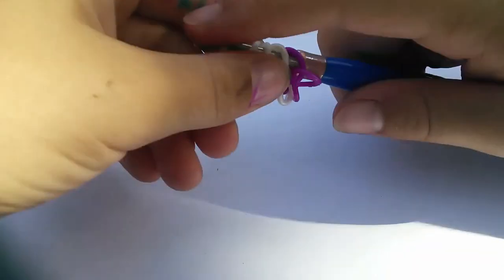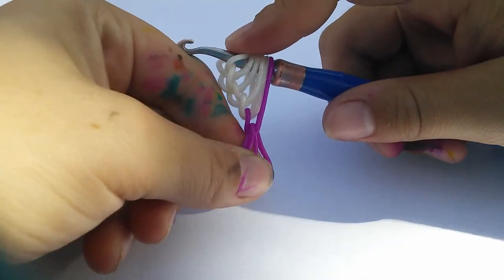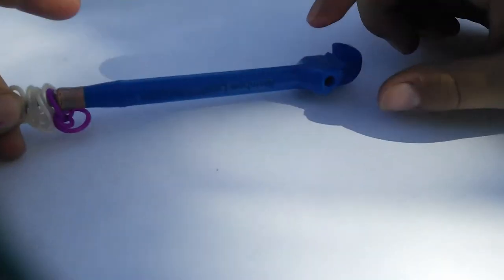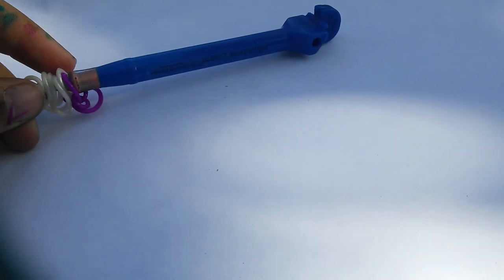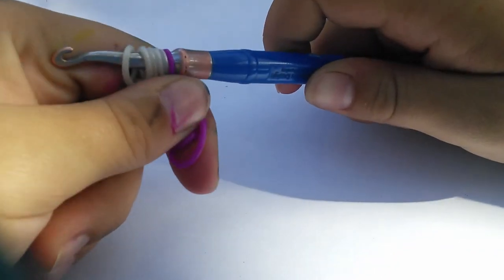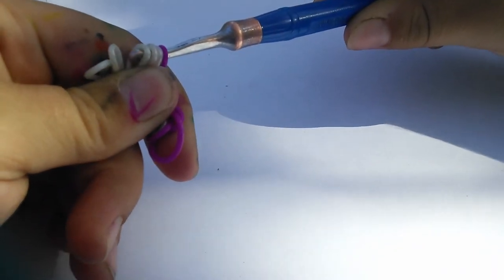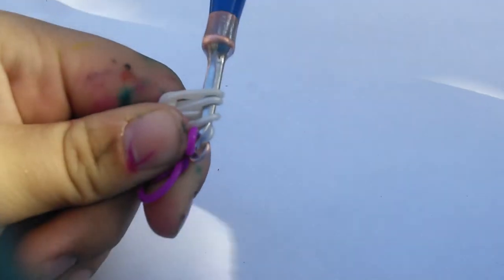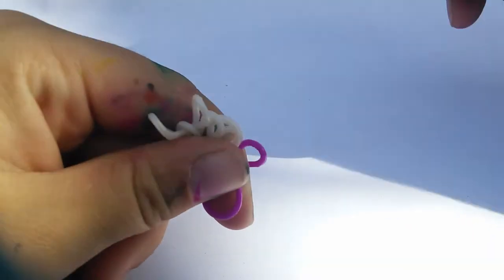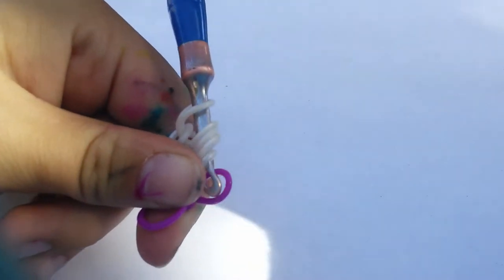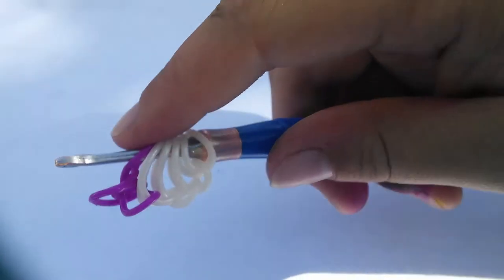Now this is where a double crochet hook would be helpful, because instead of having to take it off and place it on the other side, you would just have to slide this down to this end. But if you're doing this with a Rainbow Loom hook like I am, you're going to take all these bands, pinch them, and carefully slide the hook out, and then slide it in in the opposite direction. Now I have it on, and you should have it on.